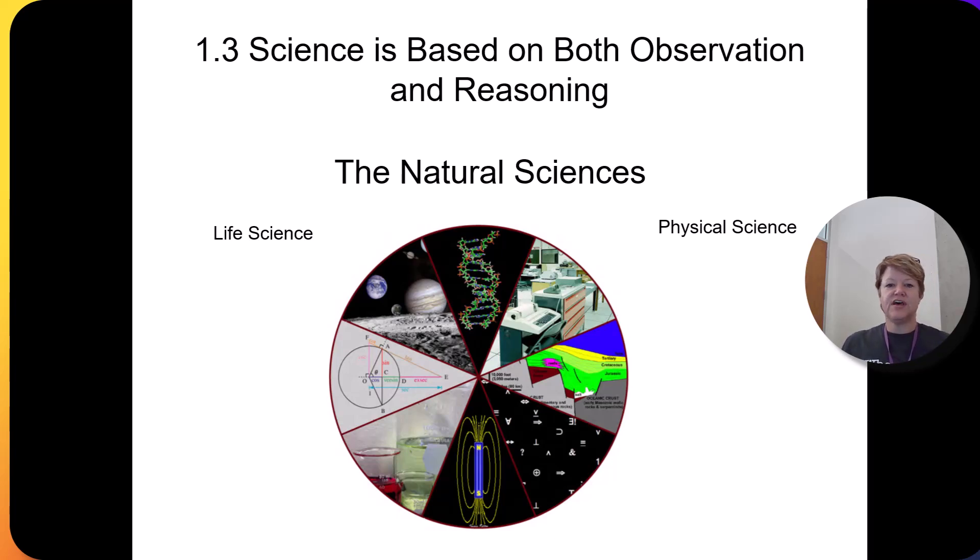The natural sciences is often a department at a university. That title or category covers all the life sciences and all the physical sciences. So the natural science is a larger umbrella heading. And within that, there's two basic branches.